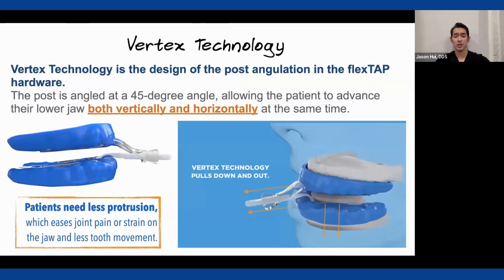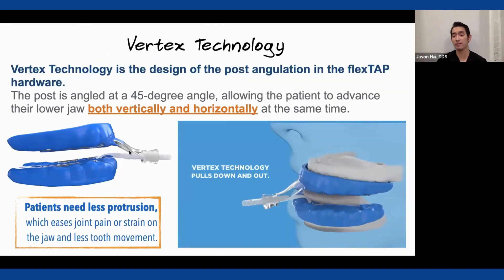The FlexTap has something called Vertex technology — a bar angled at 45 degrees. As you turn the thumb screw to the right, your jaw goes further forward. But unlike most appliances that give mostly horizontal movement, this angled connection means you get both down and forward movement simultaneously — vertical and horizontal at the same time. This creates more space than a one-dimensional movement, so patients generally need less protrusion, which helps with joint pain, discomfort, and forces on the teeth.